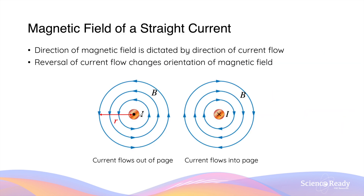We can also examine the relationship between the current direction and its own magnetic field by taking a different view. In this diagram, the current is going out of the screen in the left diagram, and it's going into the screen on the right. If we use the right-hand grip rule and point our thumb away from the screen in the left diagram, our fingers of the right hand when put into a grip form should be going in an anti-clockwise direction, which is the same direction as the radial magnetic field. When we put our thumb into the screen, our fingers should be going in a clockwise direction. So the direction of a current dictates the orientation of the radial magnetic field.